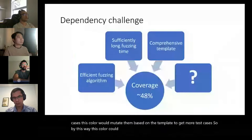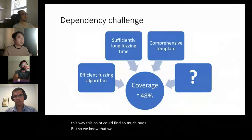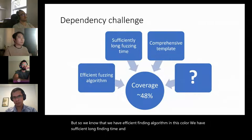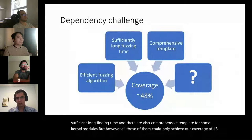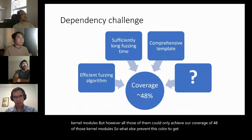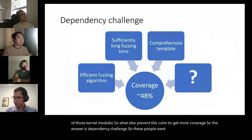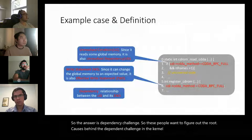Despite having efficient bug-finding algorithms, sufficient fuzzing time, and comprehensive templates for some kernel modules, coverage only reaches 48 percent of those kernel modules. So what else prevents Syzkaller from getting more coverage? The answer is the dependency challenge. This paper aims to figure out the root causes behind the dependency challenge in kernel fuzzing.